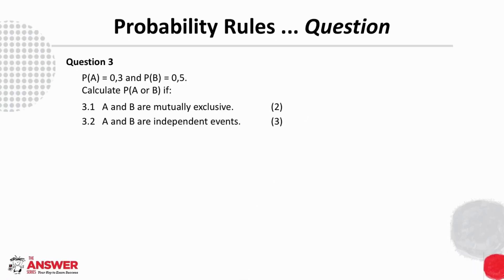Question 3 gives the probability of A and the probability of B, and then asks us to calculate the probability of A or B given two different conditions: first, when A and B are mutually exclusive, and second, where A and B are independent events. Pause here for a moment and see how you go with this one.